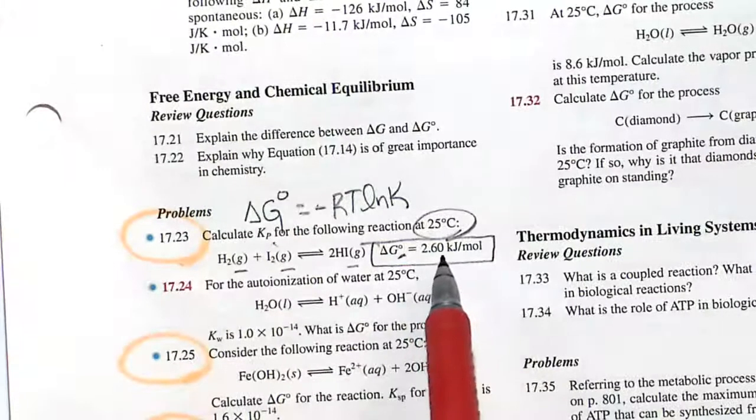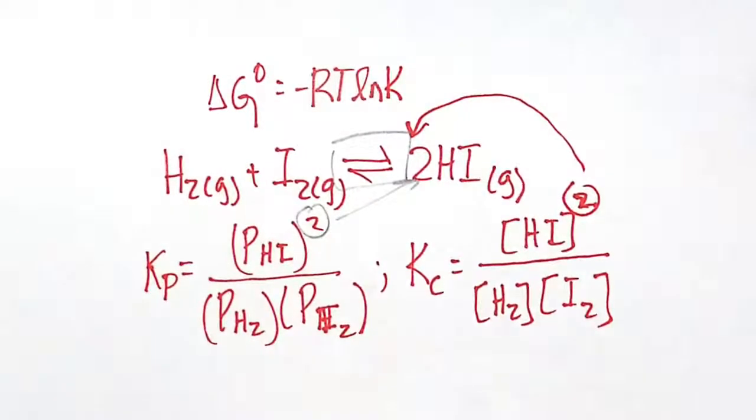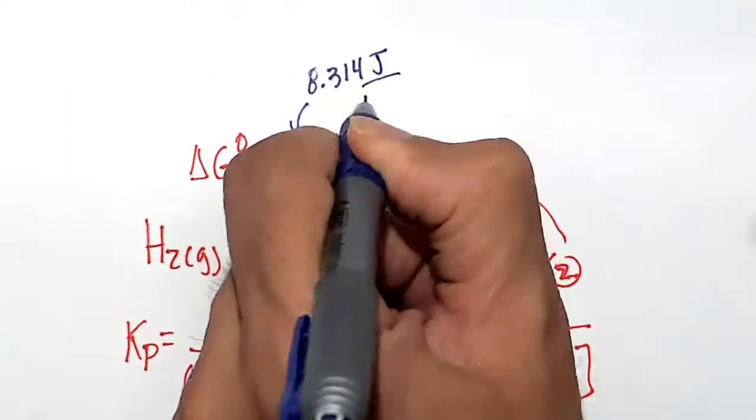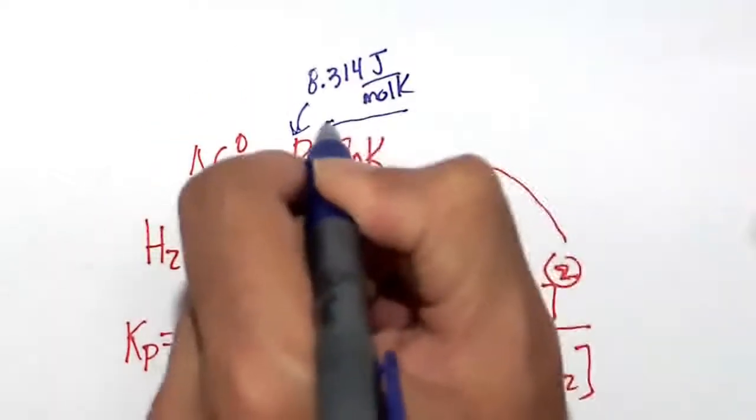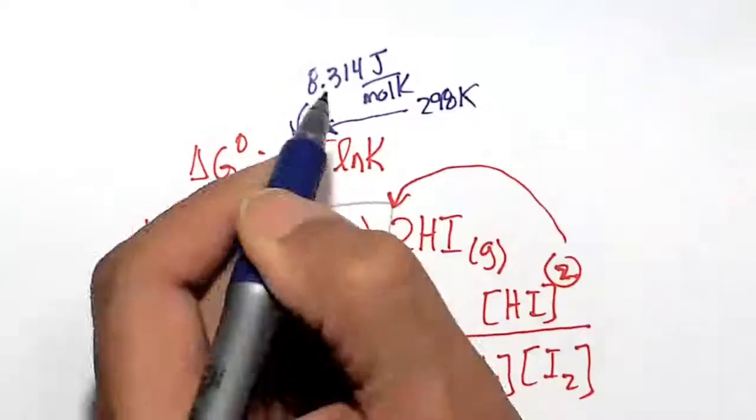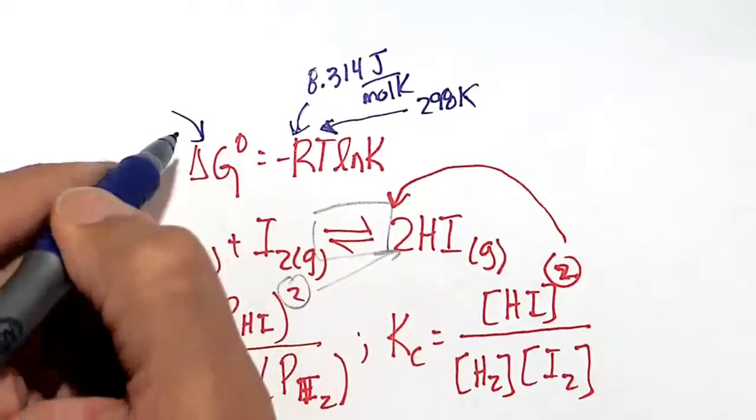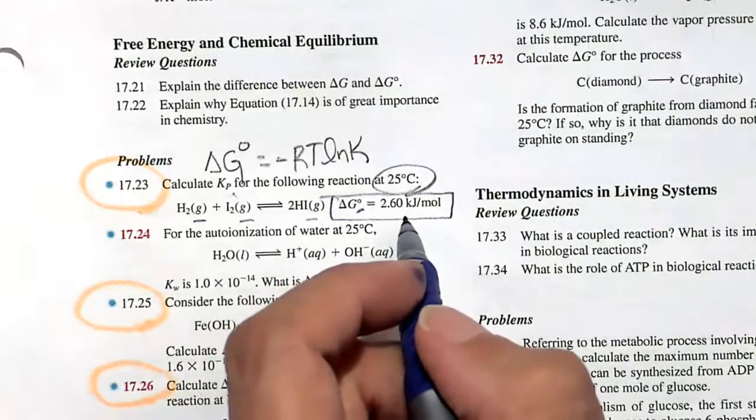So we're asked to find Kp in terms of pressure, so we got 2.60 kilojoules per mole here. R is 8.314 joules per mole Kelvin, so that's a constant. The T here, this is standard state, so it's going to be 298 Kelvin. 25 degrees C is 298 Kelvin.